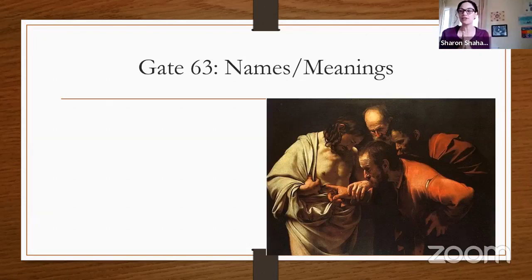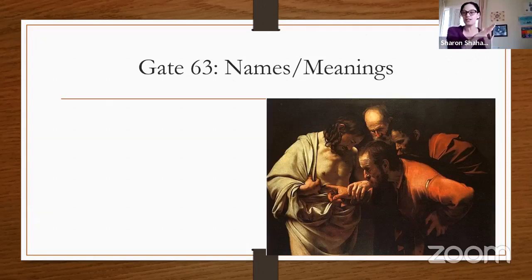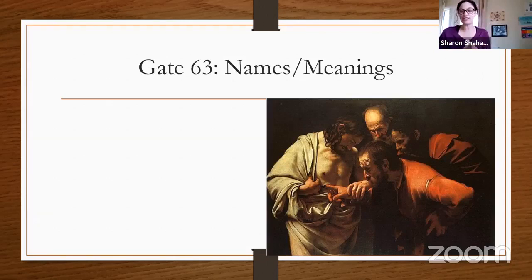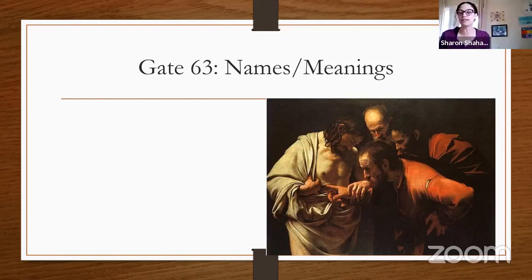As we go week by week and look at where the sun goes into transit, I'm trying to show you how these different gates occupy not only different locations in the body graph but also what center they're in. In the case of the 63, it is our first gate in the head center — the very top of the body, the crown center.